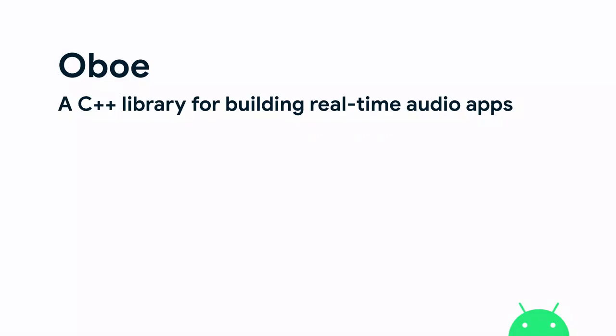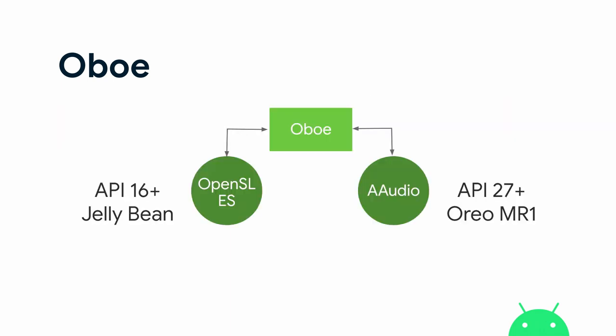Oboe is a C++ library for building real-time audio apps. Essentially it's a wrapper around the two native audio APIs on Android. It uses AAudio, which is the new best library for doing anything with audio on Android, but it's only available from API 27. If that's not available, Oboe falls back to using OpenSL ES to give you coverage on all older devices.